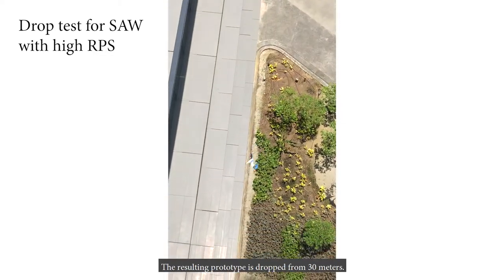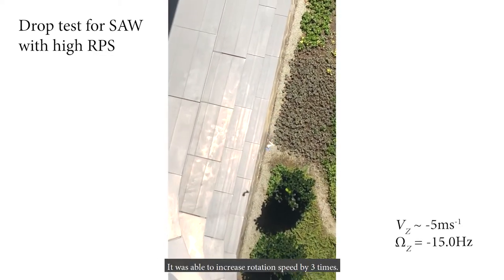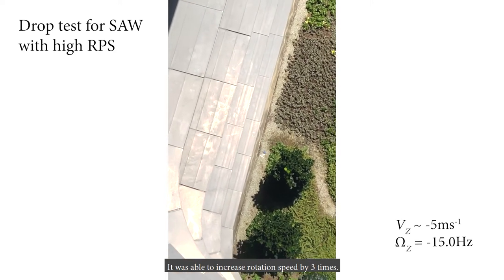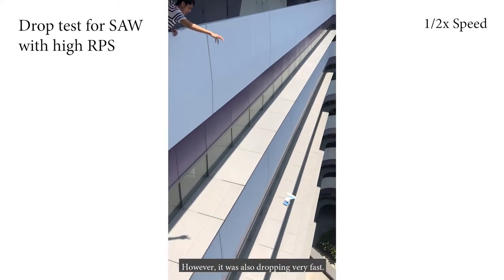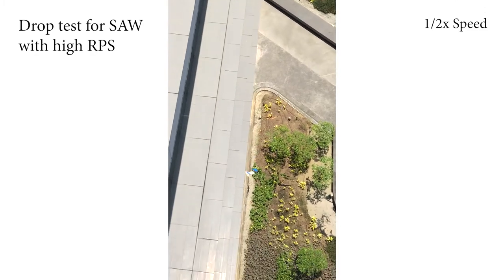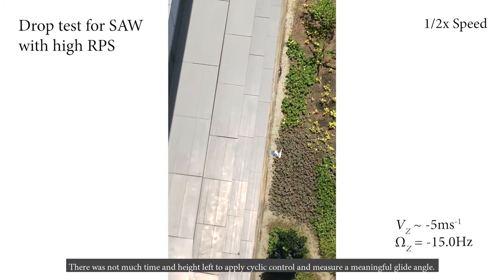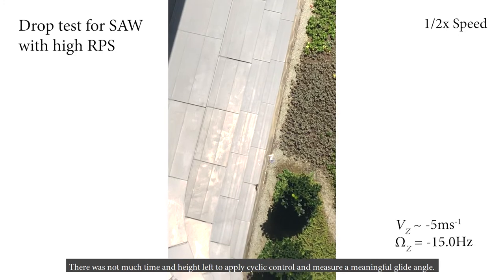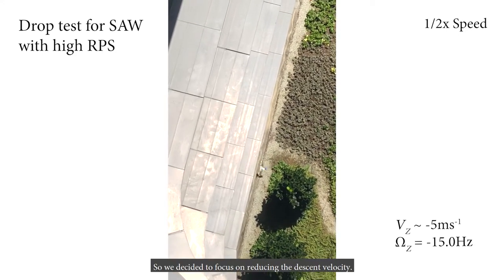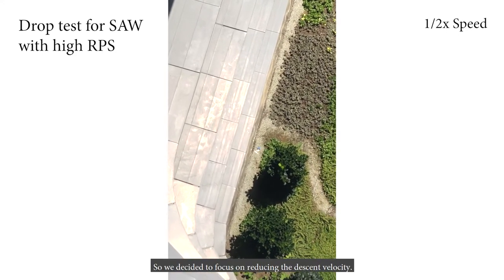The resulting prototype is dropped from 30 meters. It was able to increase the rotation speed by three times. However, it was also dropping very fast. There was not much time and height left to apply cyclic control and measure a meaningful glide angle. So, we decided to focus on reducing the descent velocity.